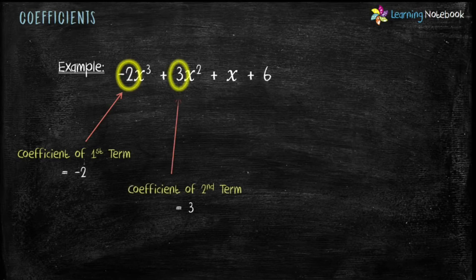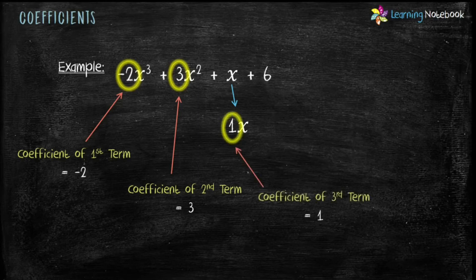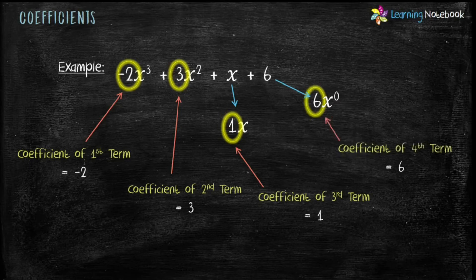The third term is x, which can also be written as 1x, so the coefficient of the third term is 1. The last term is 6, which can also be written as 6x raised to the power 0, so its coefficient is 6. A number multiplied by a variable is the coefficient of that variable.